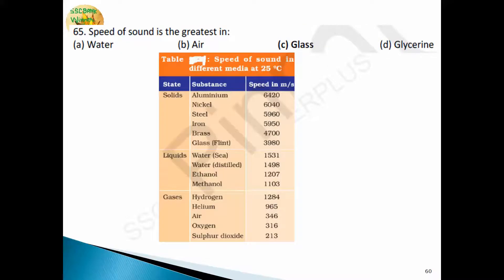Question 65: the speed of sound is greatest in — water, air, glass, or glycerine? Comparing the speed of sound in solids, liquids, and gases: sound travels fastest in solids, second fastest in liquids, and slowest in gases. Among the options — water, air, glycerine, and glass — glass is a solid and has the highest speed. The speed of sound in glass is approximately 3980 m/s. Answer: glass.